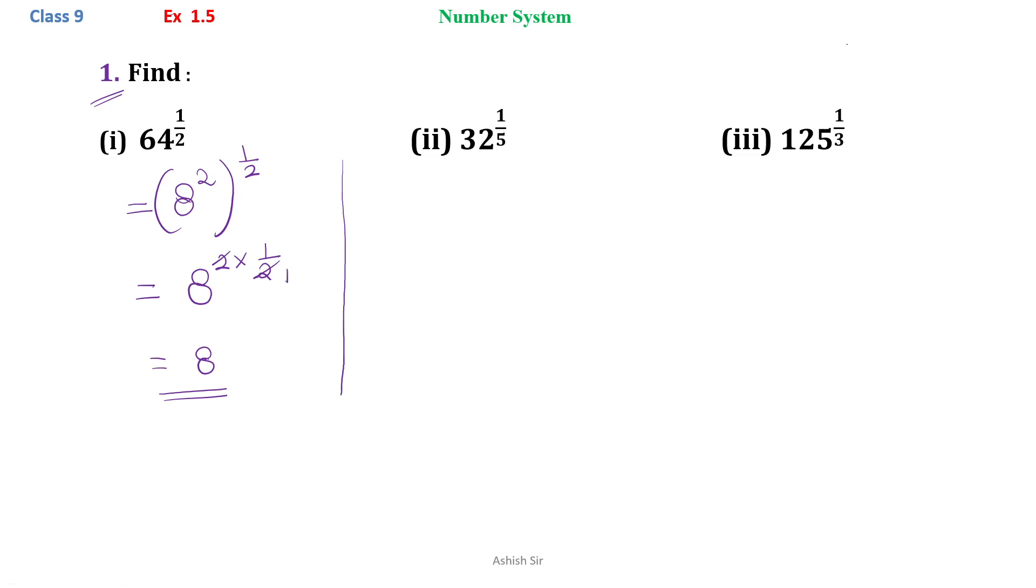Then we have 32 to the power 1 by 5. Now, we know that 32 can be written as 2 to the power 5. So 32 can be written as 2 to the power 5 to the power 1 by 5. Now, we know that we can multiply the powers, 5 into 1 by 5. 5 and 5 cancel, and we are left with 2.